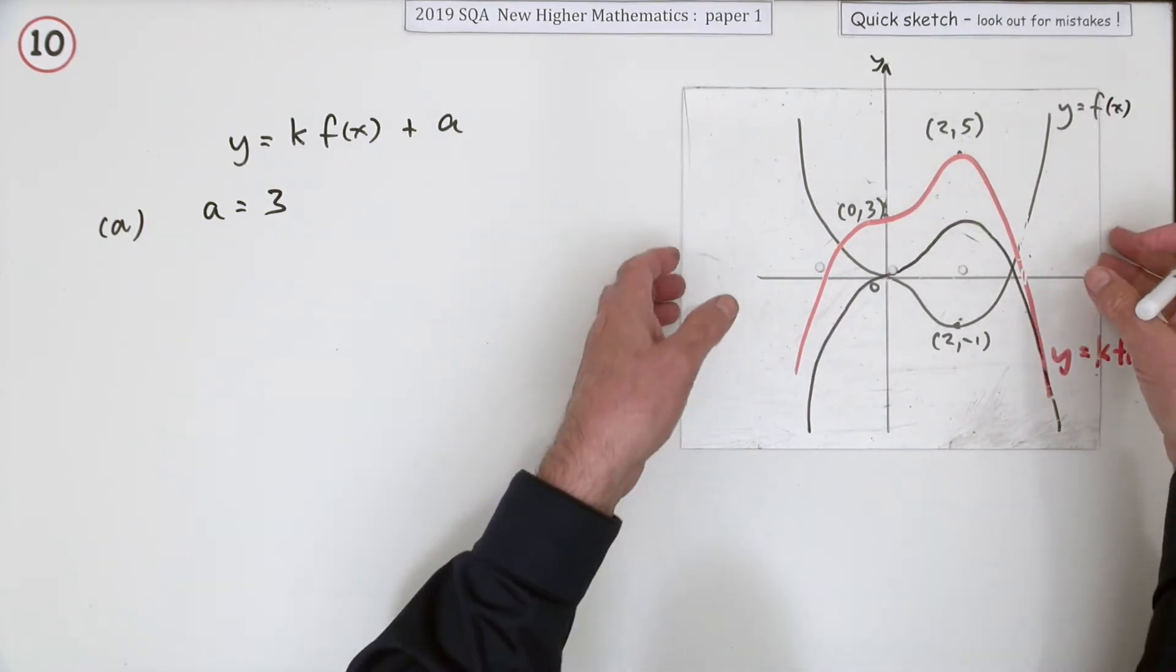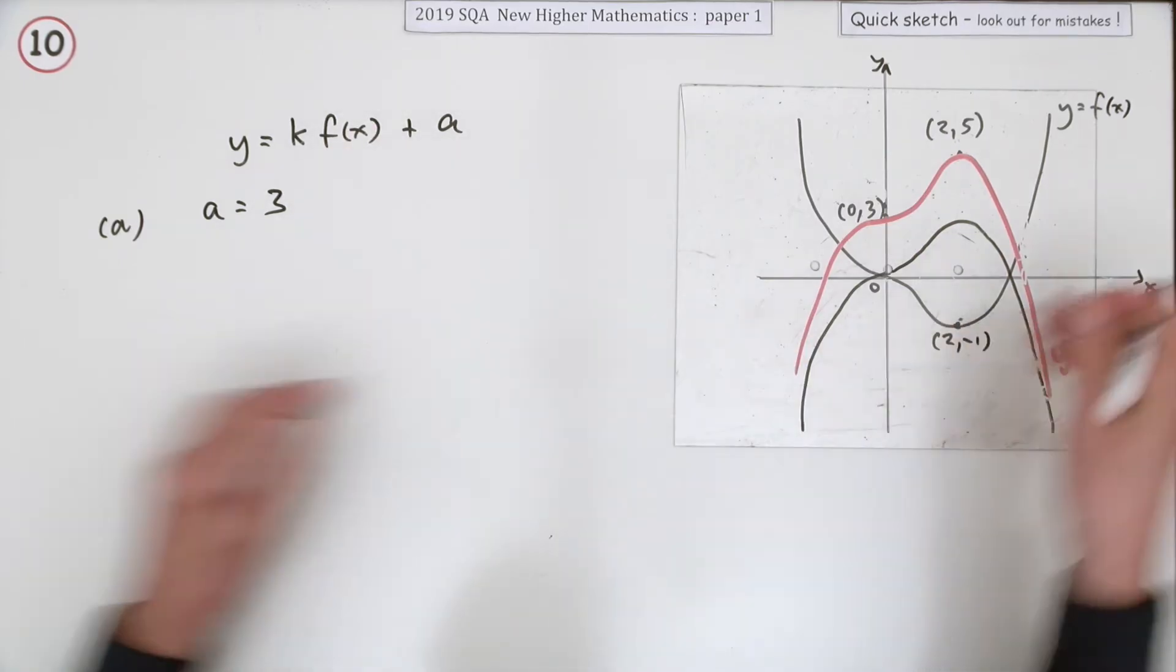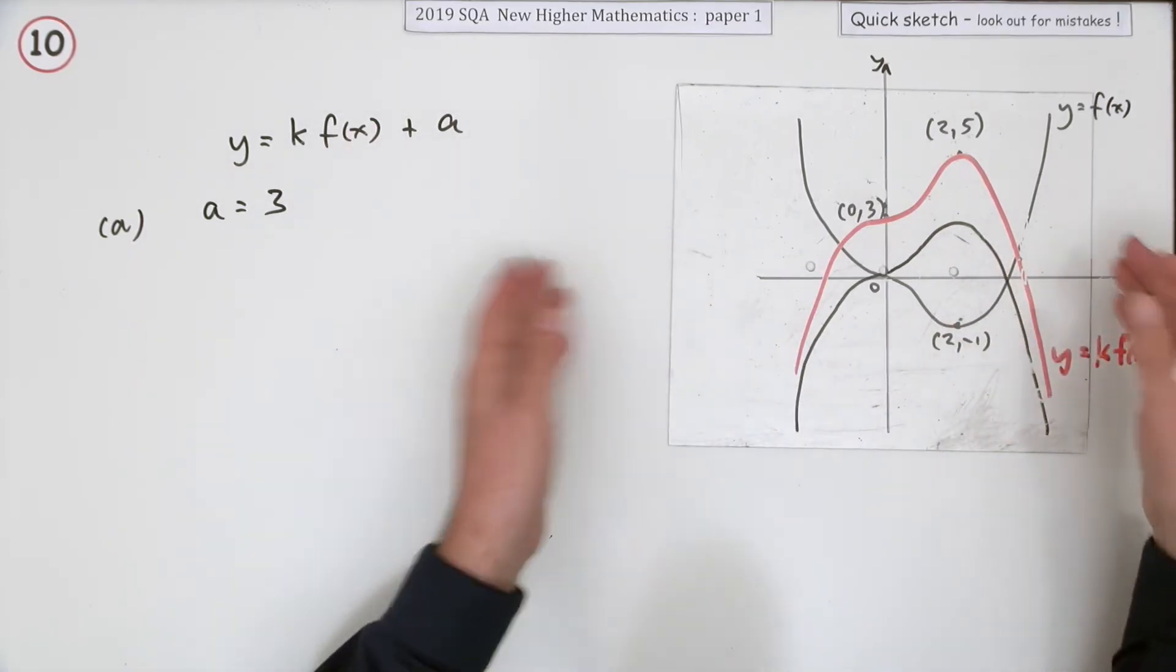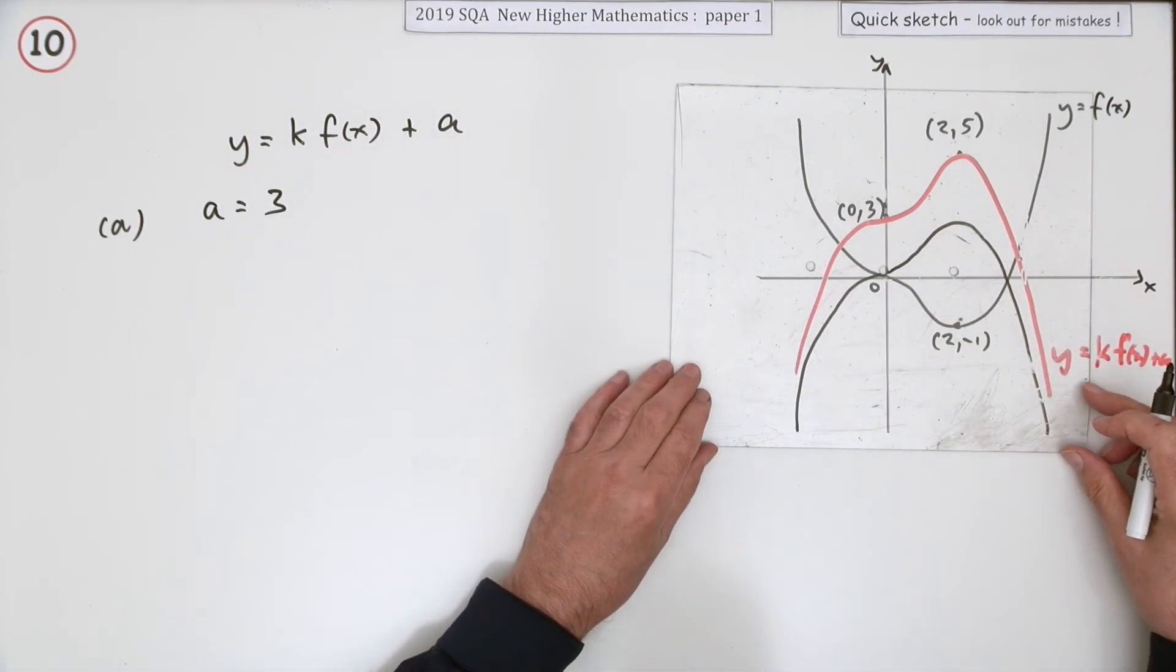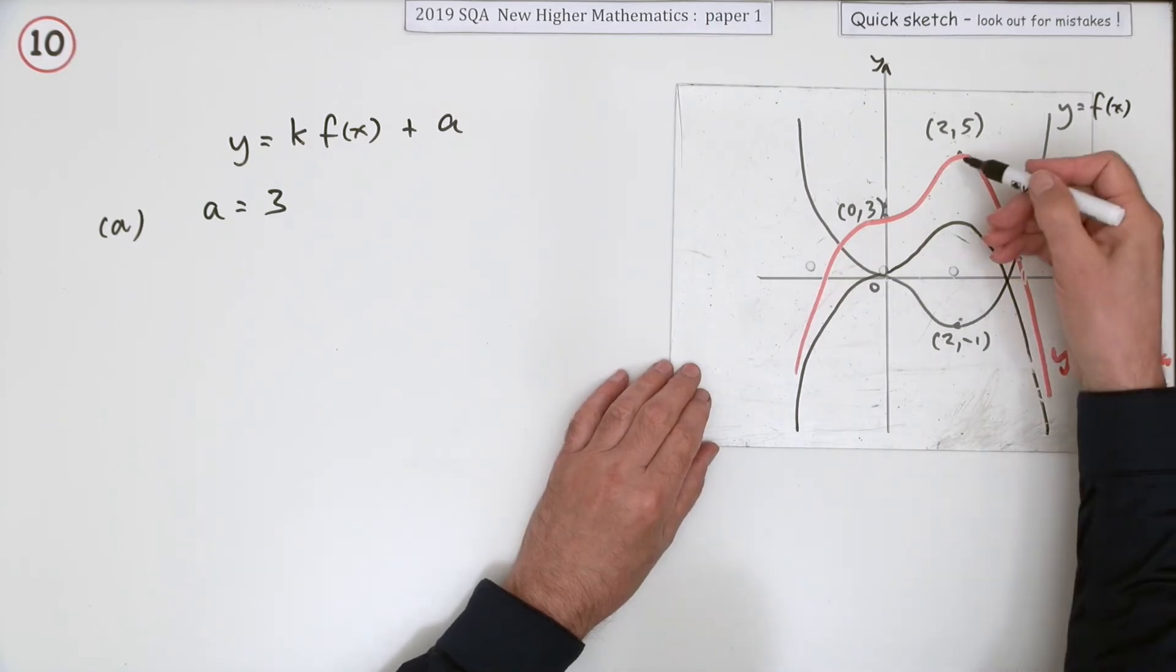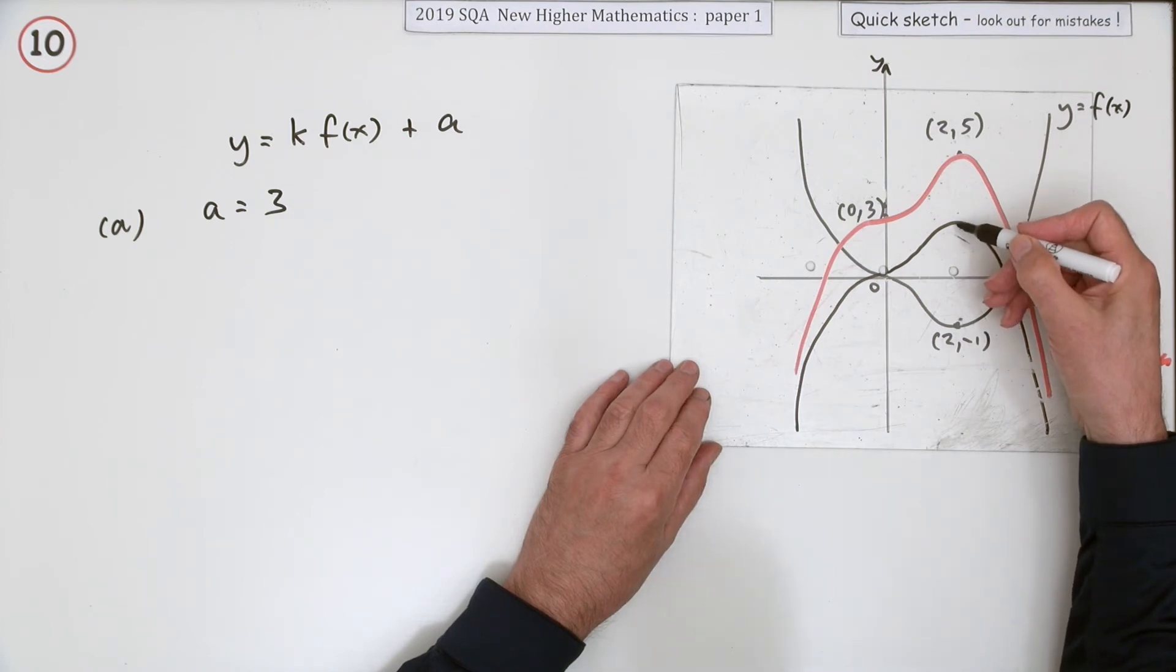Now what was the multiplication? Well that multiplication was definitely a negative, but was it negative one? Was it a bit more? You know it's been lifted up three, so you could work it back from there I suppose.